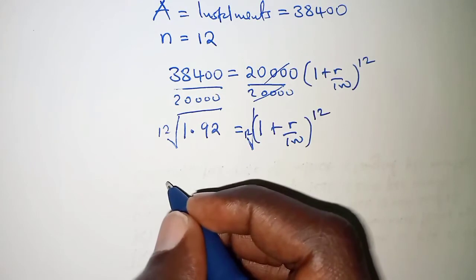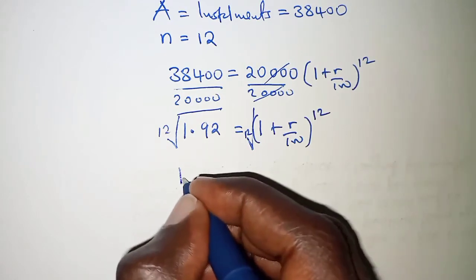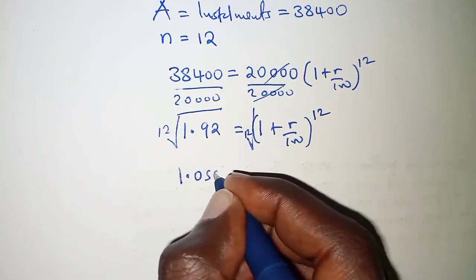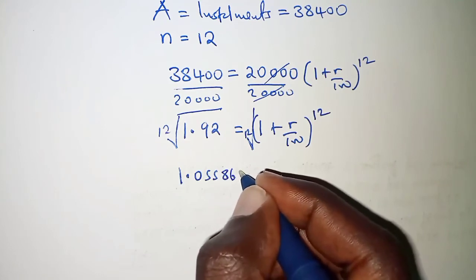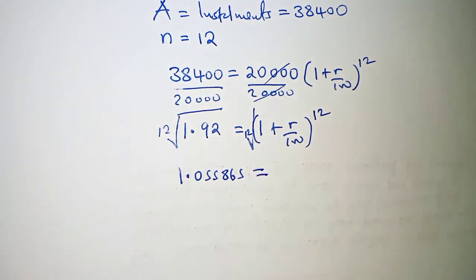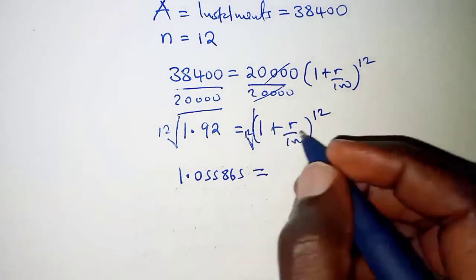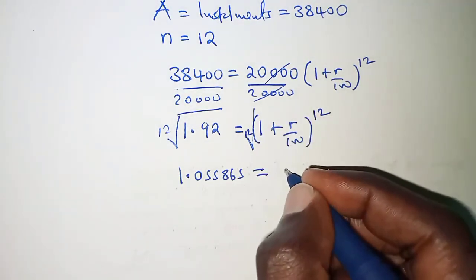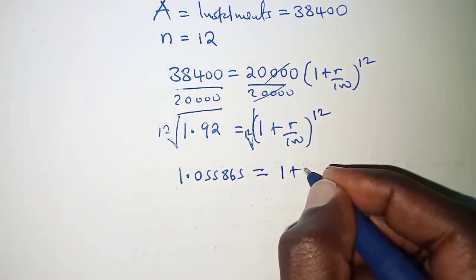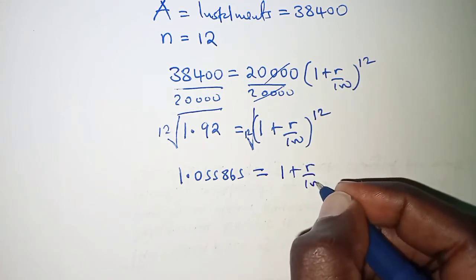So on the left hand side we will have 1.055865 from my calculator, and then on the right hand side the root sign disappears so that you have 1 plus r over 100.